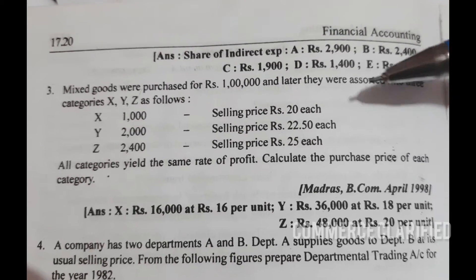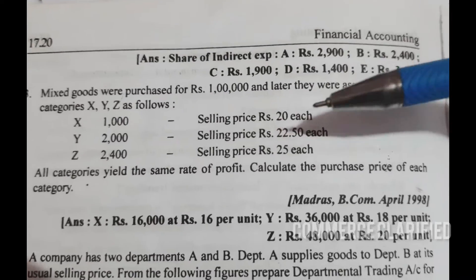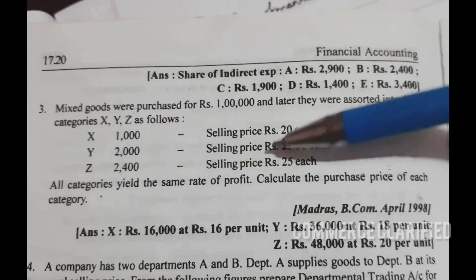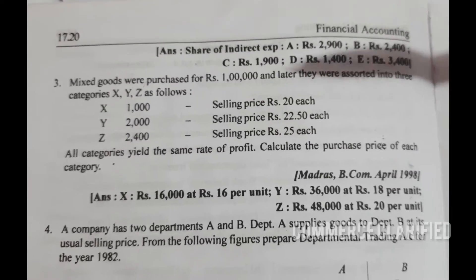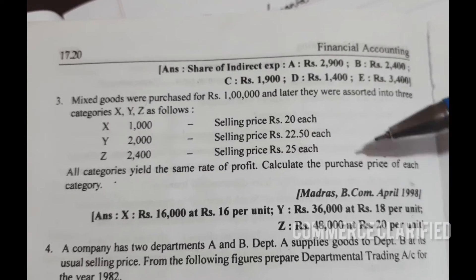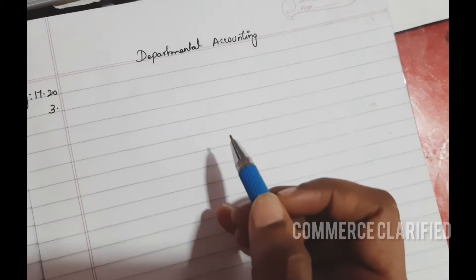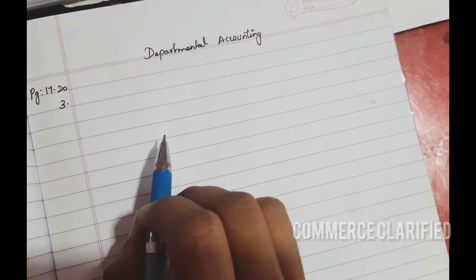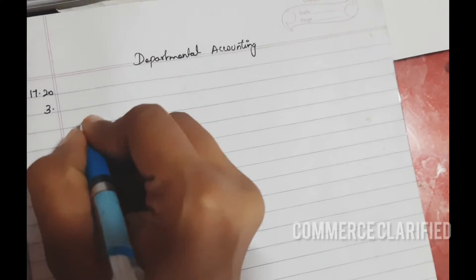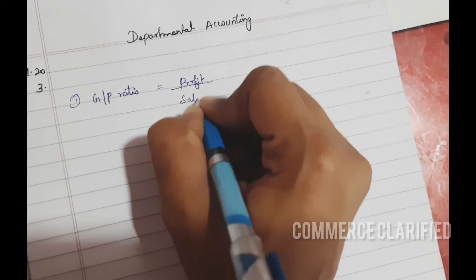If you have a trading account, you can say that you have a profit. You can find the purchase price from the selling price. The gross profit on cost price — the first step is to find the GP ratio. You have to find out the GP ratio. The GP ratio is profit divided by sales into 100.